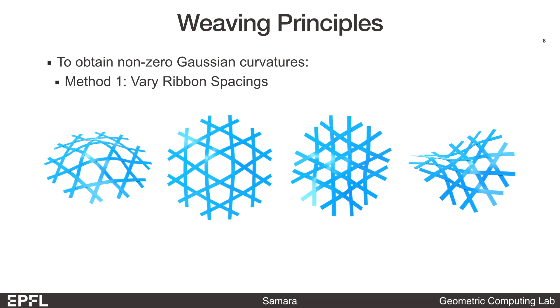The first method is to vary the spacings between the ribbons. We can push the center ribbons further apart to get positive curvature, or push them tighter to get negative curvature. But as the curvature increases, the ribbons will eventually collide.